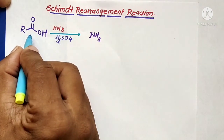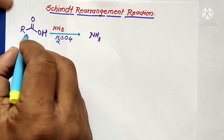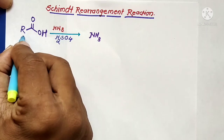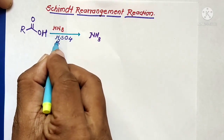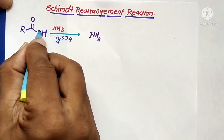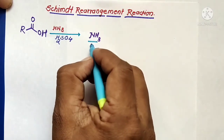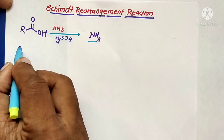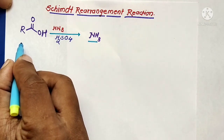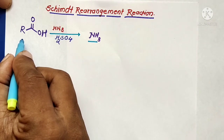The Schmidt reaction can proceed with three different acids as main substrates: the first one is carboxylic acid, then hydrazoic acid, and the third one is sulfuric acid. These three substrate molecules react with each other to form the product of this reaction, which is ammonia.